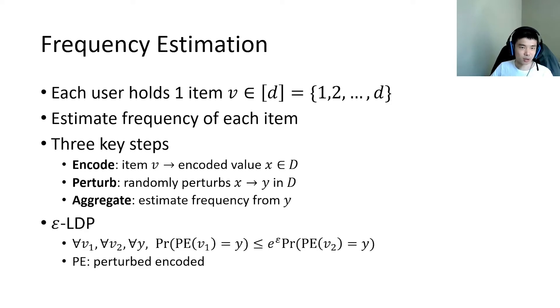Formally, we say a protocol satisfies ε-LDP if this condition is met. This guarantees one cannot recover an individual item precisely from its perturbed encoding value.